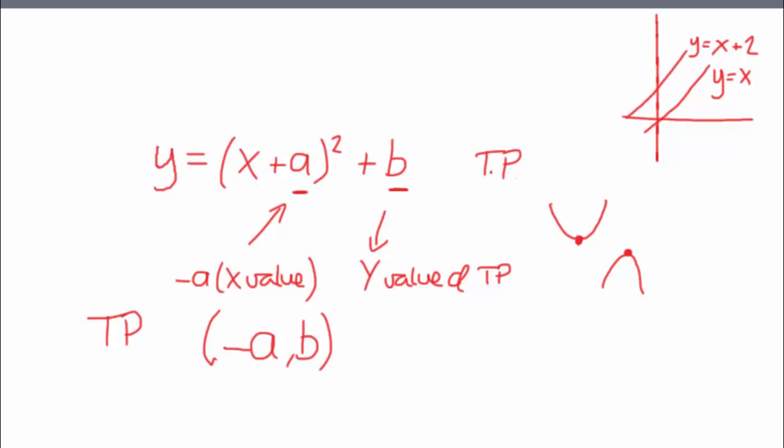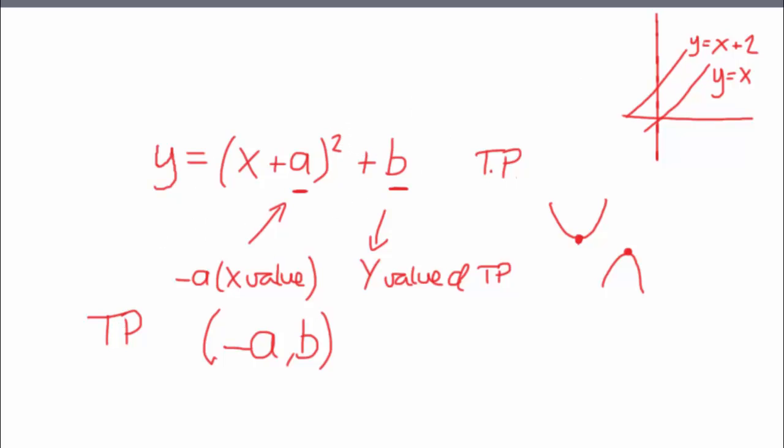Now I'll do a wee example, just to let you see how you'd work that out. So here's a wee example. So what you've got there is, we'll just say, y equals x minus 1 squared plus 5. Now, that 5 is your b, that 1 is your minus a.